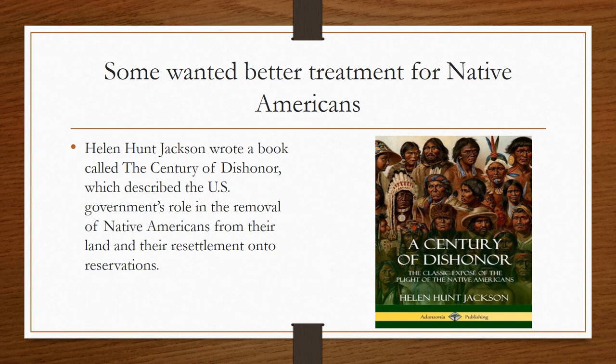There were also some Progressives who wanted better treatment for Native Americans. One famous one was Helen Hunt Jackson, who wrote a book called The Century of Dishonor, which described the U.S. government's role in the removal of Native Americans from their land and their resettlement onto reservations.